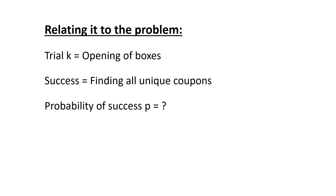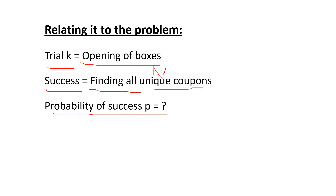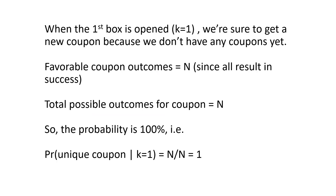So how does this relate to our problem? We have the opening of boxes which are the trials, and we have the success criteria which is finding all the n unique coupons, but we don't know what the probability of success is. So let's go step by step and try to estimate this probability.